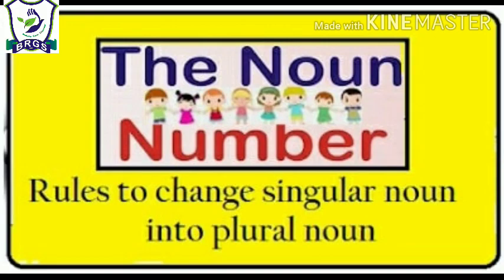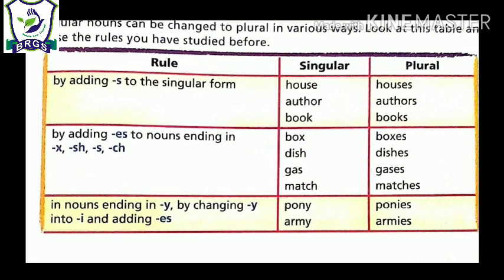Now we will learn how to change the singular noun into the plural noun in various ways. There are various rules. Let us study one by one. Our first rule is by adding S to the singular form. For example, if we are given any singular form noun, we add S. House becomes houses. Author becomes authors. Book becomes books. We have added S.